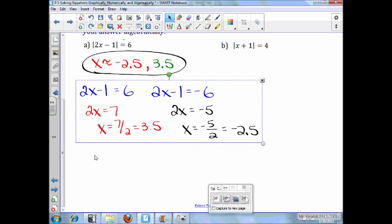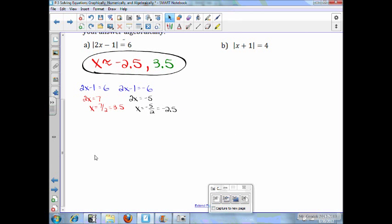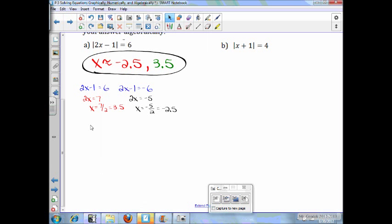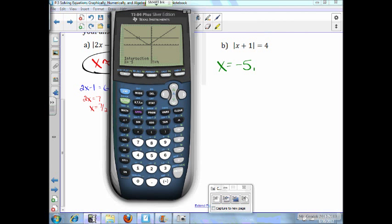Let's make these small here. So, we have more room to work for the next part. Now, for part B, we have the absolute value of x plus 1 equals 4. So, this is what we have. Again, we'll have two answers here. Let's use our intersect feature. x equals negative 5. It's not going to be about. x is going to equal negative 5. And 3.